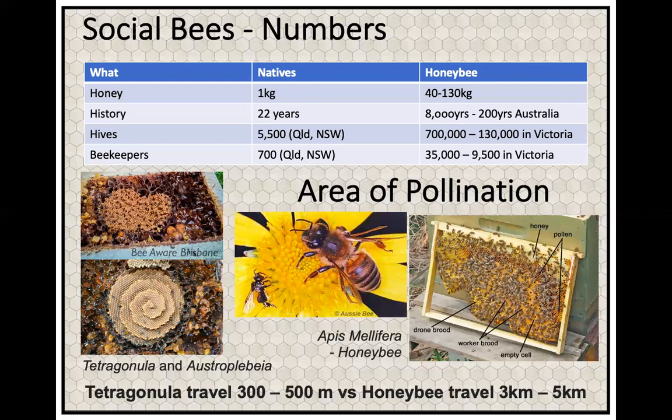We've got a lot more knowledge about the workings of the honeybee. In Queensland and New South Wales there are 5,500 hives of the native honey-producing bees, whereas in Victoria alone we've got 130,000 hives and 9,500 registered beekeepers — and that's not counting feral hives and unregistered beekeepers. The European honeybee has a very strong foothold here in Australia. We are only just finding out how important native pollinators are and the different skill sets they bring to pollination, which is why biodiversity is so important.